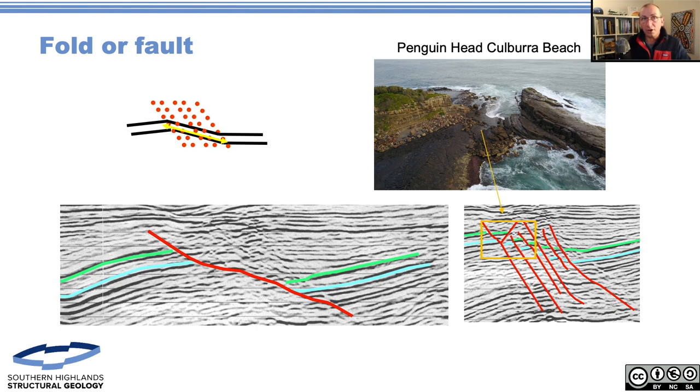This is an outcrop we're hoping to get you to soon on a virtual field trip - Penguin Head at Coalcliff Beach not far from where we are. Here we've got a nice flat footwall and the monocline coming down. There's probably a set of faults in here which is why it's been eroded by the sea.